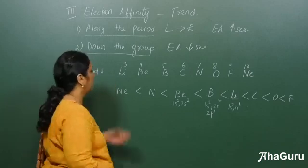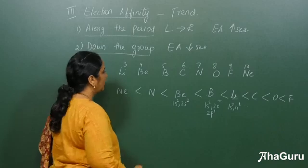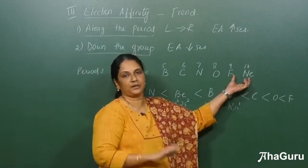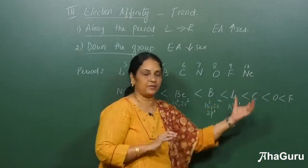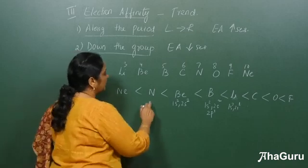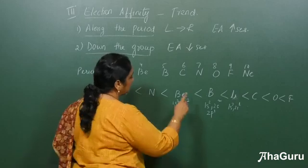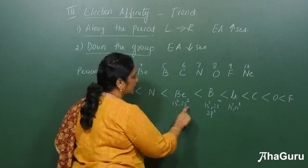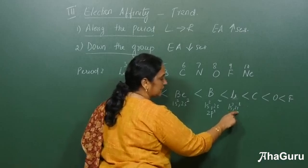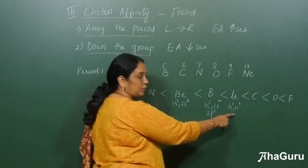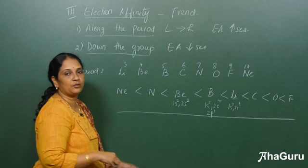Let us consider period 2 and arrange the elements by increasing electron affinity. Neon has a completely filled electronic configuration, so it would not want to take up an electron — it has the least electron affinity. Nitrogen is half-filled, so it is more stable and also resists taking up an electron. Beryllium is fully filled (2s2), so it also has low electron affinity. Lithium has a 2s1 configuration, so adding one electron takes it to a more stable configuration, giving it higher electron affinity than boron. Remember this trend for competitive exams.